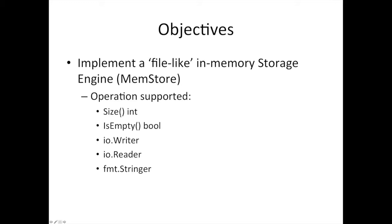What operations are we going to support? We're going to support size - you can ask it how many bytes have you stored. Is it empty? You can check how many bytes, and if you get zero, it's empty. Another convenient sugar-coated method is to just have a method called isEmpty, so you can call it directly in a conditional without having to compare it to zero. And then we're going to implement IOWriter because this is like a file-like memory storage, so you should be able to write some bytes. The only reason it's in memory but operates like a file is we don't want to talk about opening files in the file system yet. And of course it's also going to support read. No good type is complete without implementing the stringer interface, which we've seen a number of times.